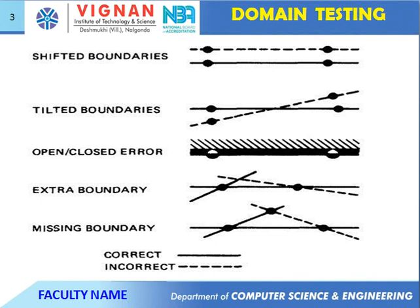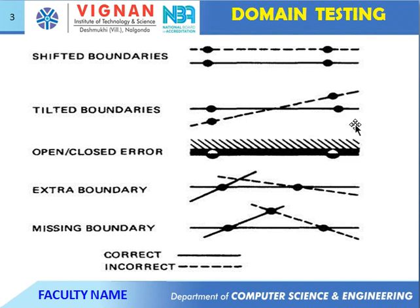Open and closed error boundaries. Shifted boundaries use dotted lines for closed boundaries and dark lines for closed boundaries. Tilted boundaries use dotted lines and closed boundaries or straight lines and closed boundaries. These represent title boundaries. Open and closed errors include incomplete closing and incomplete closed errors, incomplete open, and incomplete closure.